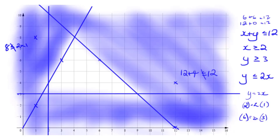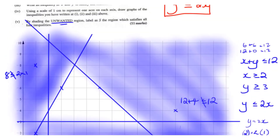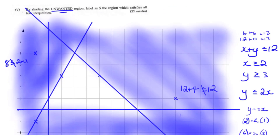We've now shaded all of our unwanted regions. The question asks us to label as S the region that satisfies all four inequalities — that's the region in the middle, bounded by those four lines. This is our wanted region, or the feasible region.